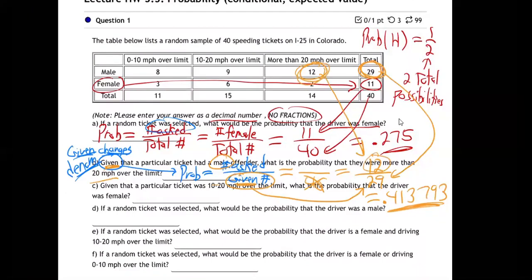We're only talking about males — we're not including everybody. We're given that it was a male, so that's out of the 29 males. Clearly we've grabbed somebody out of the group of 29 males because we're given that it's a male. Out of them, 12 out of the 29 males went more than 20 over the limit. So 12 divided by 29.